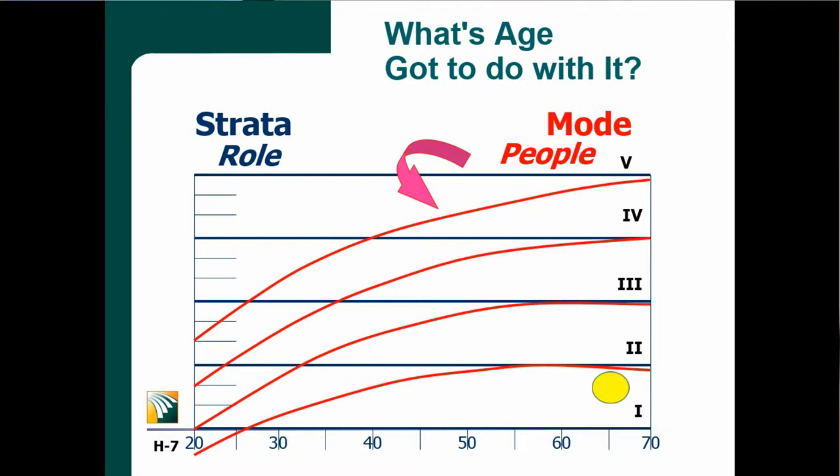Let's look at mode two. Now mode two, in their late 20s, is still operating with what stratum capability? One. But if you watch the screen, you'll see this person emerge from stratum one and peak with what stratum capability? So mode two's going to peak with stratum two capability.